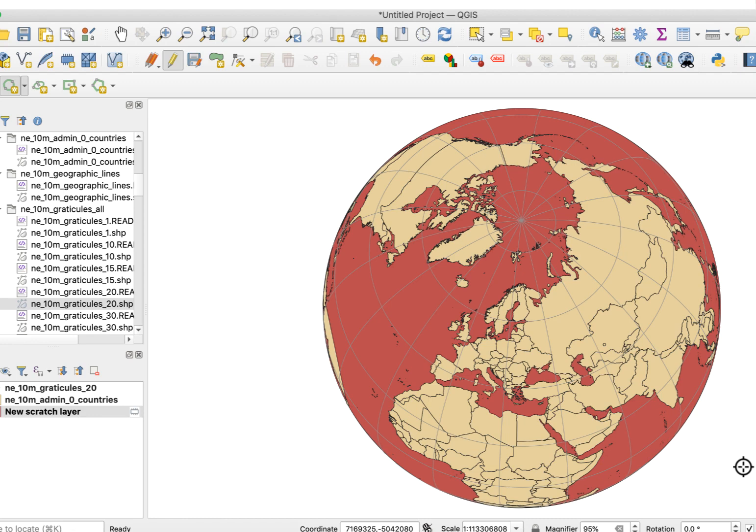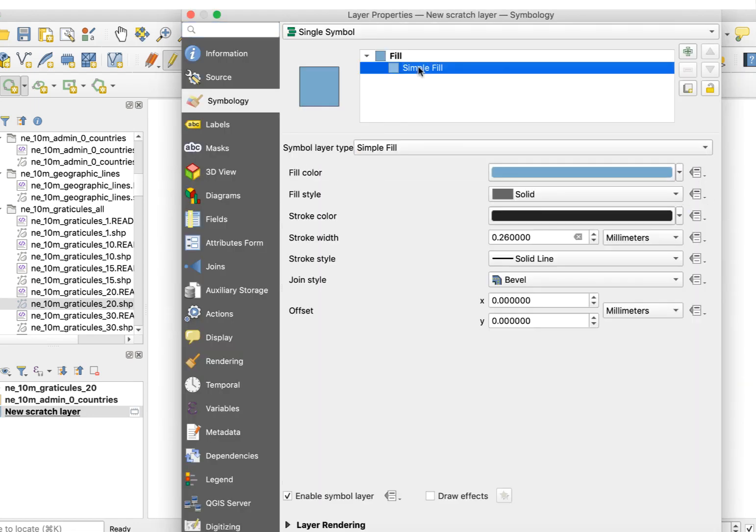Once your circle is in place, you can style it. There are two basic options: a solid color or a shape burst fill. The shape burst option looks nice, so that's what I usually use. To create this effect, double click on the scratch layer to open the layer properties window, or you can use the layer styling panel.